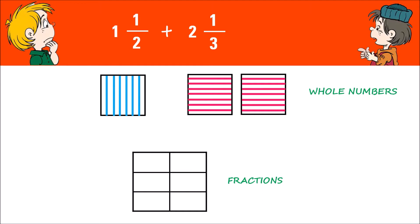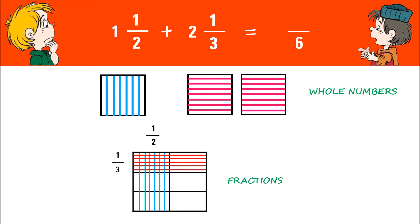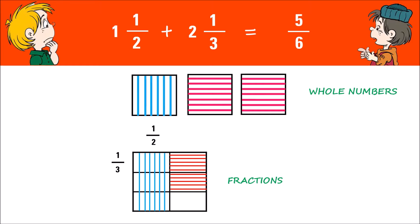This will be the new denominator. Fill in the first column with vertical lines to represent one half, and one of the three rows with horizontal lines to represent one third. For a box with both vertical and horizontal lines, move the horizontal lines to an empty box. The boxes with vertical and horizontal lines will be the new numerator. As for the whole numbers, we have three full shaded boxes in all. As a result, the answer is three and five sixths.